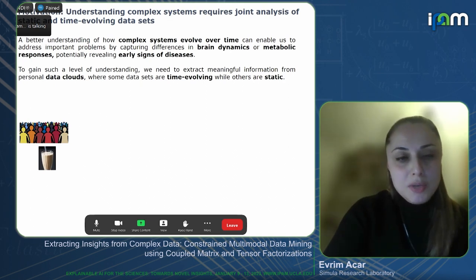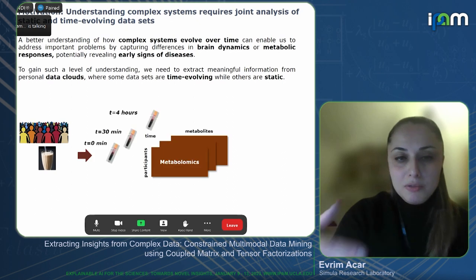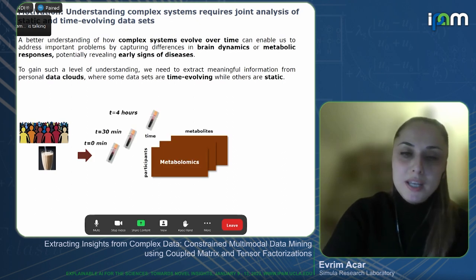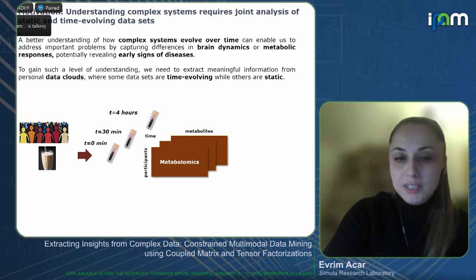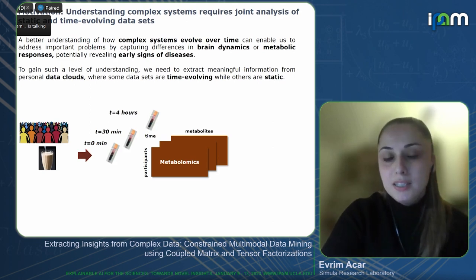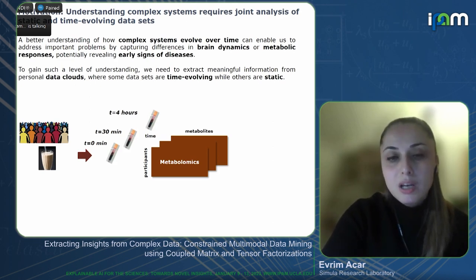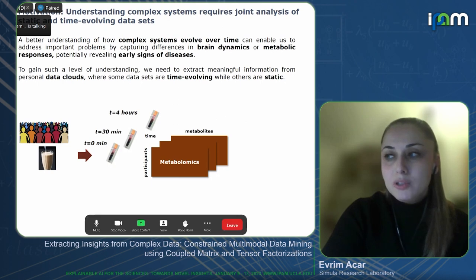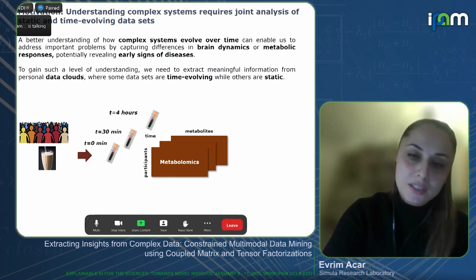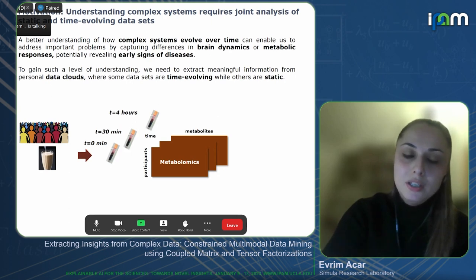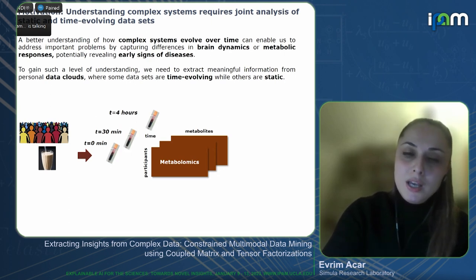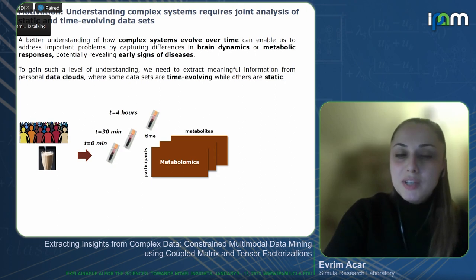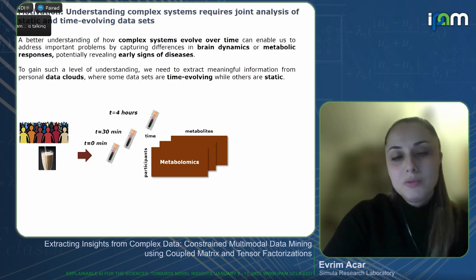Participants drink a dietary shake and every half an hour or so their blood samples are taken. These blood samples are measured using an analytical technique to detect the metabolites in the blood. So we have this participant by metabolite by time array. Through the analysis of this data set, we want to find the underlying patterns in the metabolite mode to see which metabolites act together, how they change in time, and whether these patterns can reveal differences among groups of subjects.